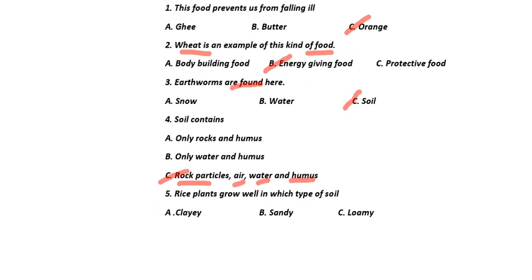Now moving to the fifth question: rice plants grow well in which type of soil? Rice plants grow in clay soil. So now check all your answers. First answer is C, second answer is B, third answer is C, fourth answer is C, and the fifth answer is A. You can tick the answers — if it is correct, put marks; if it is wrong, don't.